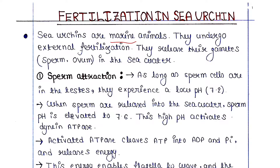Sea urchins undergo external fertilization. They release their gametes — that is sperm and ovum — into the sea water. The fertilization in sea urchins consists of four steps. The first step is sperm attraction.